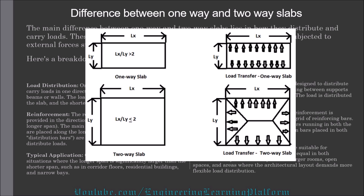The load distribution of a one-way slab, as you can see, is distributed perpendicular to the shorter span, while in two-way slabs the load distribution is trapezoidal and is distributed on all sides of the structural support.